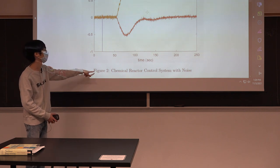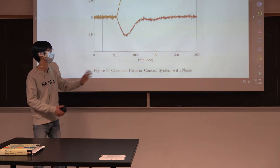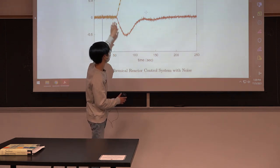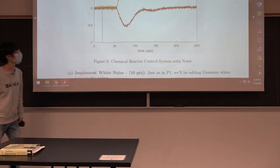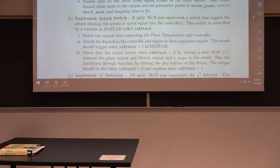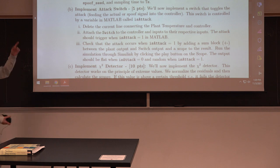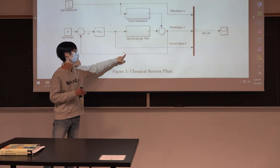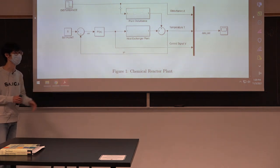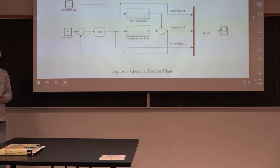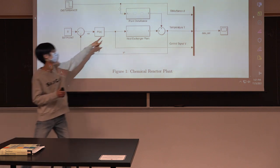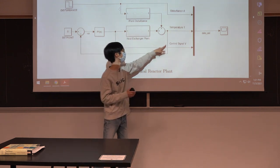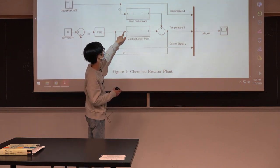This is a noisy version of the system. Once you define the noise block and the correct power of the noise, you should get a plot showing a disturbance and then the controller gradually stabilizing the system. There is another noise to consider: in P1, we added noise to the observations (Y_N). But in the second part of the problem, we apply dynamic watermarking to the control signal, so another watermark noise needs to be added to the control signal as well.